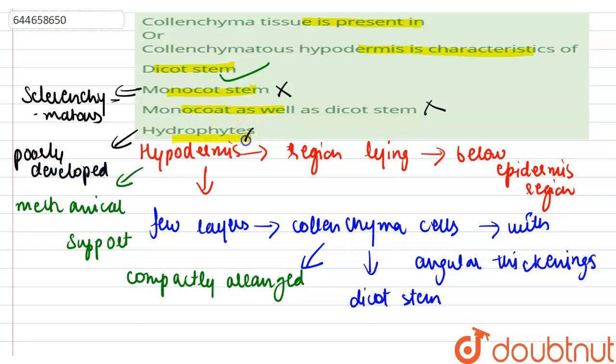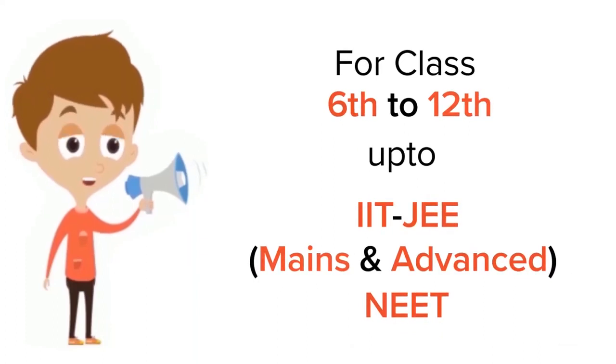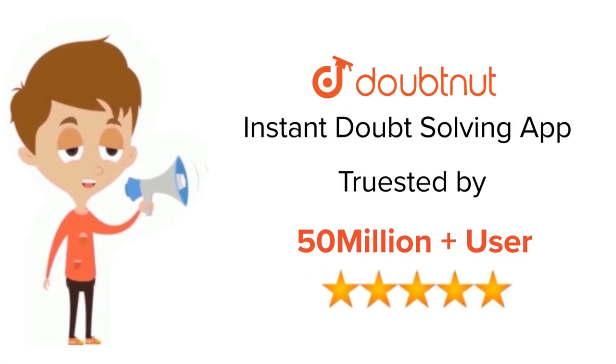So the correct option for this question is dicot stem. Colenchyma tissue is present in dicot stem, or colenchymatous hypodermis is characteristic of dicot stem. Thank you for class 6-12, IIT-JEE and NEET level, trusted by more than 5 crore students.